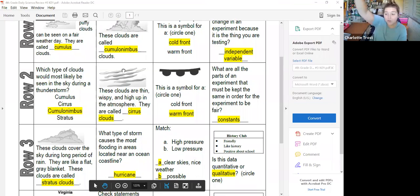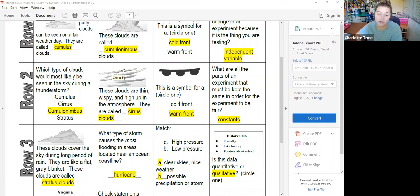Those thin, wispy ones really, really high up in the air, those are called cirrus clouds. And how I remember them, I remember cirrus the horse, because if you think about like horse hair, it's really thin and wispy and it kind of like waves. So I kind of remember like they look like horse hair up there, cirrus the horse.